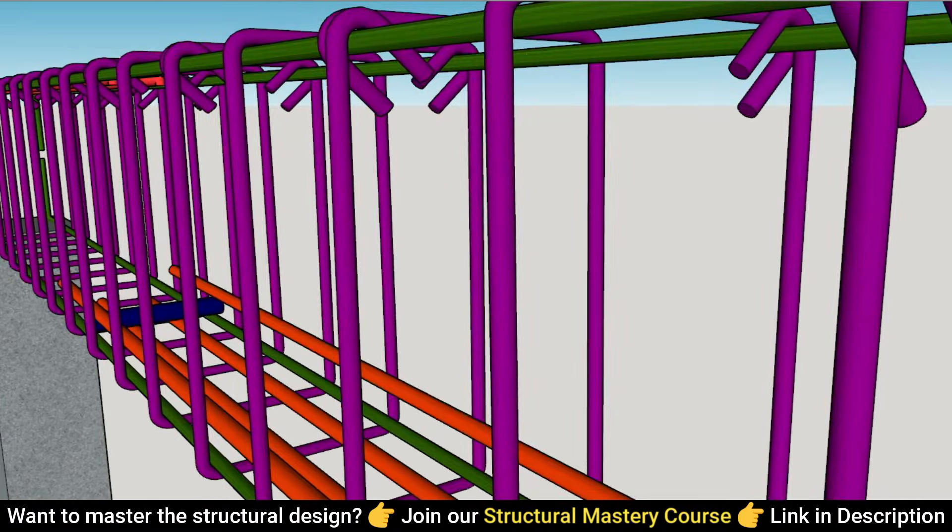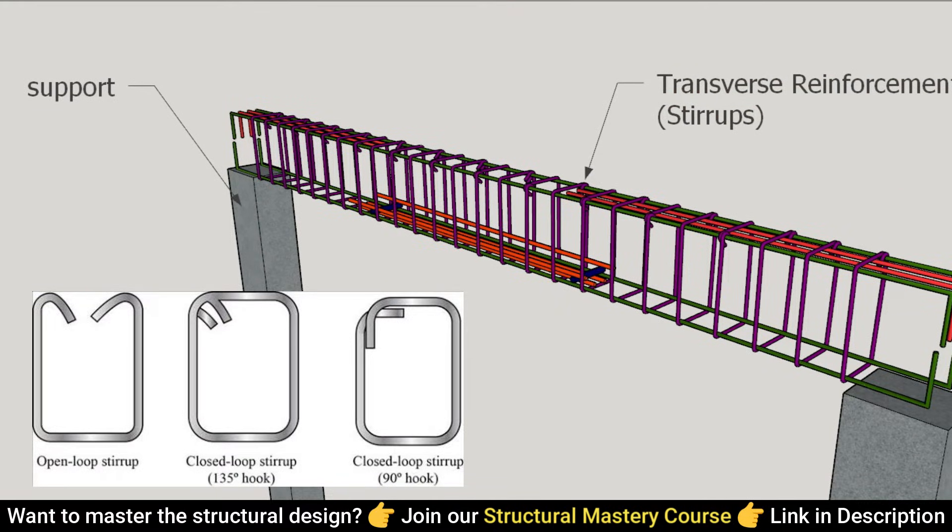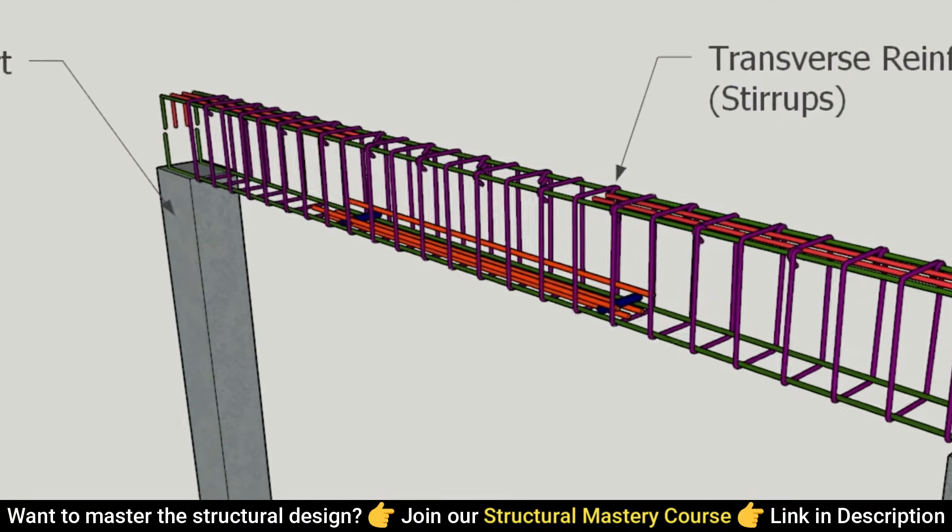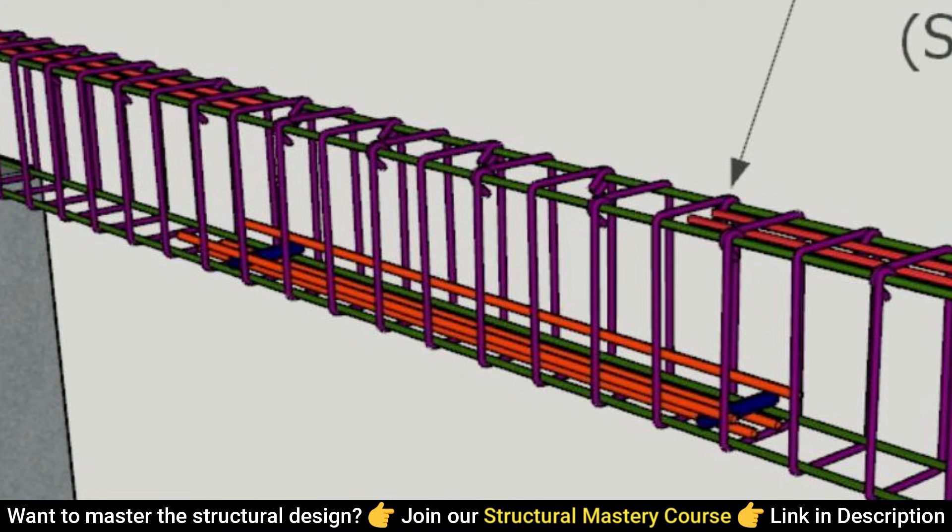Stirrups come in various configurations depending on the number of legs and whether they are open or closed looped. Additionally, the hook angle can vary based on design requirements, typically being 180-degree, 135-degree, or 90-degree.